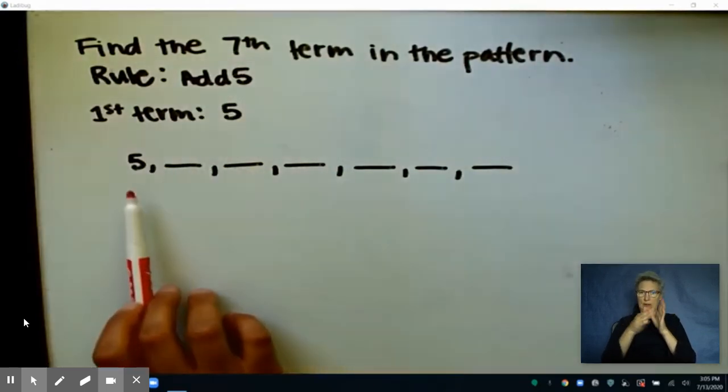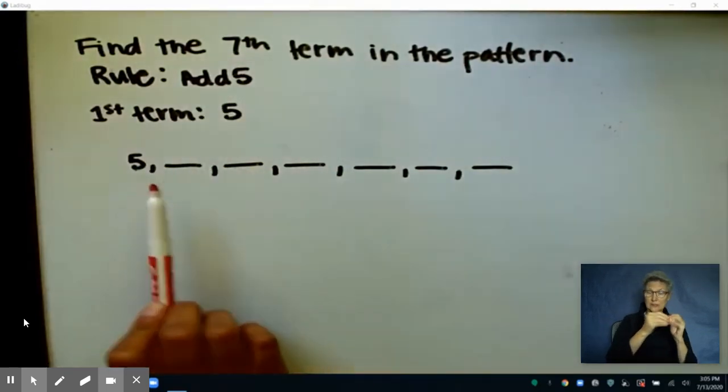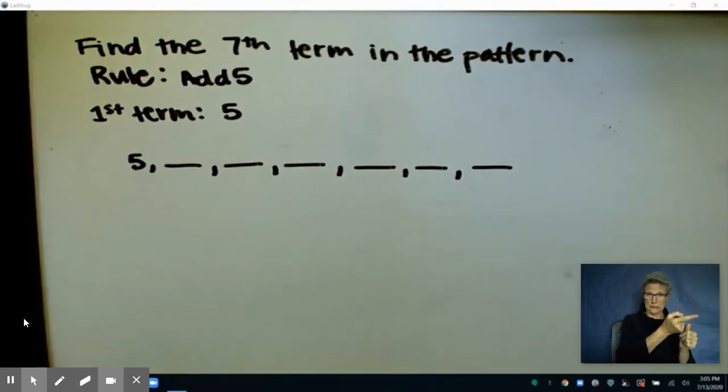They tell us that our first term is 5, and our first term is already listed, and then we have blanks here to fill in the rest of these terms.